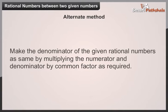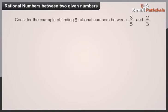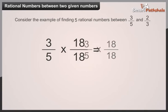Consider the example of finding five rational numbers between 3 divided by 5 and 2 divided by 3. Take 3 divided by 5 and multiply both numerator and denominator by 18 to get 54 divided by 90.